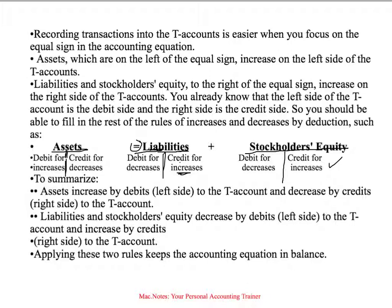The decreases are the opposite. If a transaction decreases an asset, we record it on the right-hand side of that particular asset — whether it be cash, accounts receivable, or what have you. If a transaction decreases a liability like accounts payable or notes payable, we record that decrease on the left-hand side or debit side. And if a transaction reduces shareholders' equity, we record that on the left-hand side. So: assets increase by debits and decrease by credits; liabilities increase by credits and decrease by debits. When we apply these rules, we have equal debits and credits — we should always be in balance.